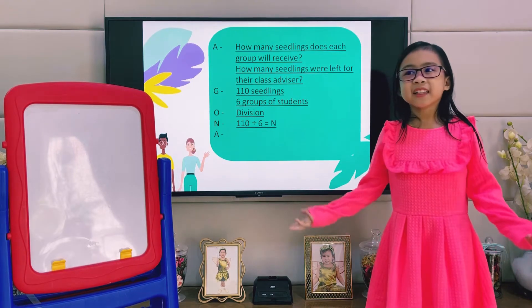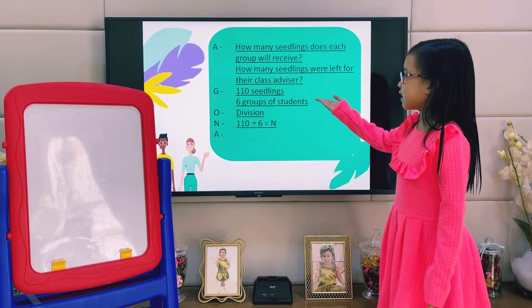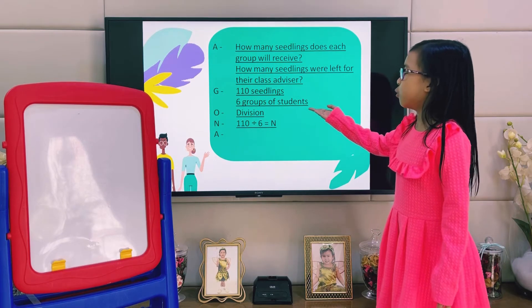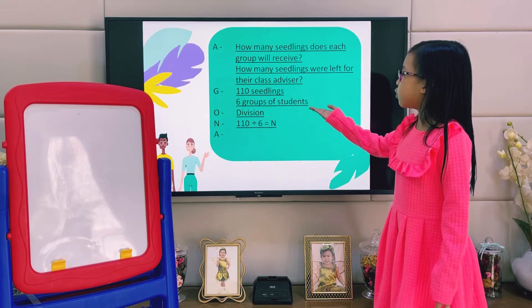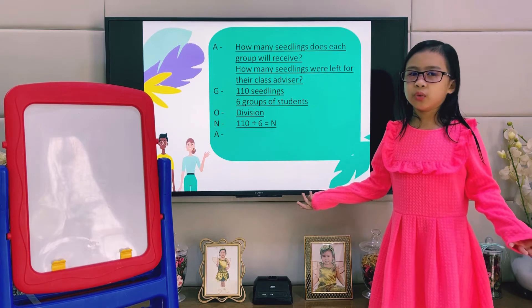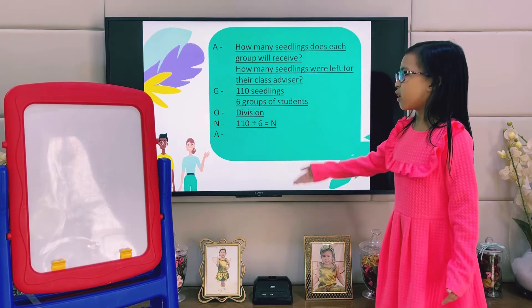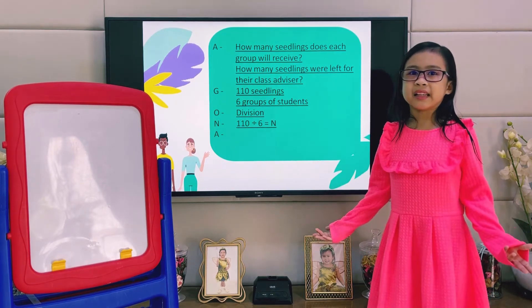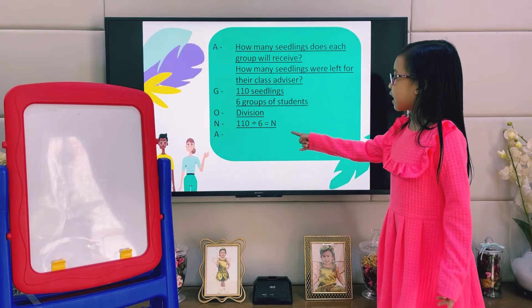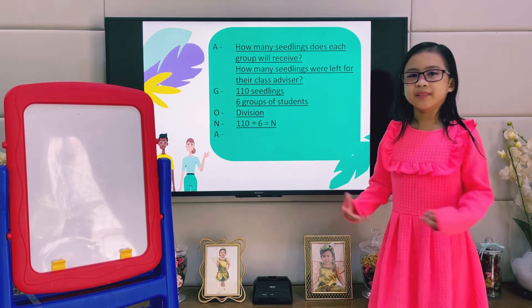What is given? 110 seedlings and 6 groups of students. What operation should we use? Division. The number sentence is 110 divided by 6 equals N.